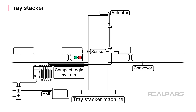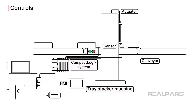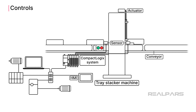Once a stack is complete, it is transported out of the machine using the conveyor belts. Now that we know what the machine does, let's take a look and see how a CompactLogix PLC system could be used to control this machine. The control system for this machine is made up of a CompactLogix PLC, which controls the machine. The CompactLogix PLC is connected to several other devices to monitor and control the machine.